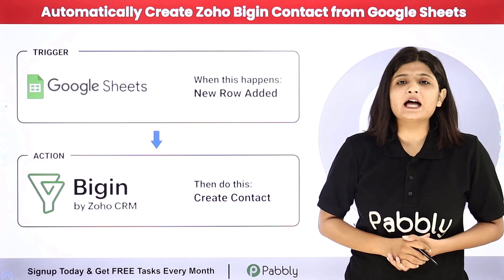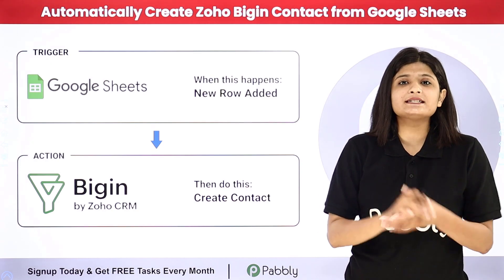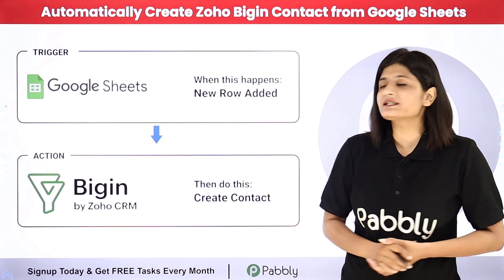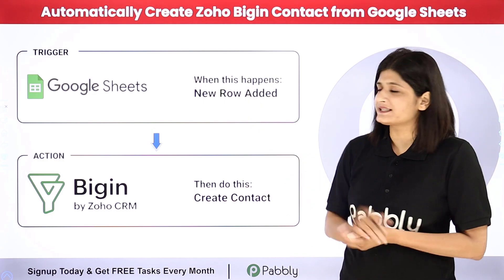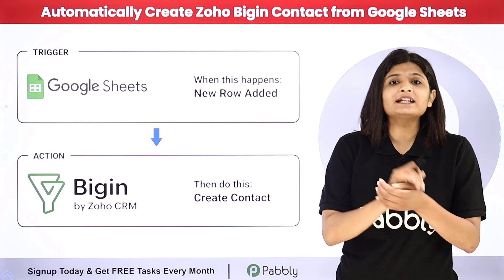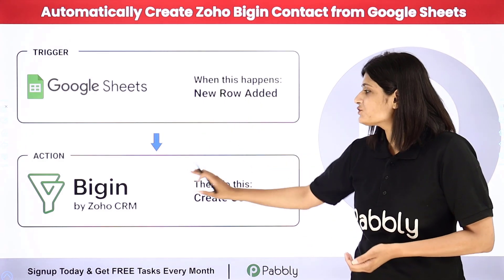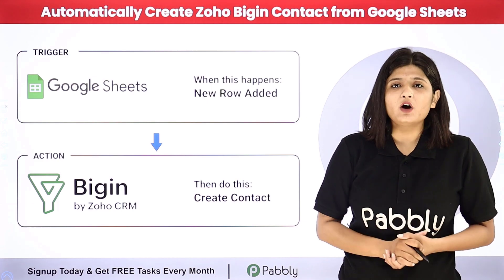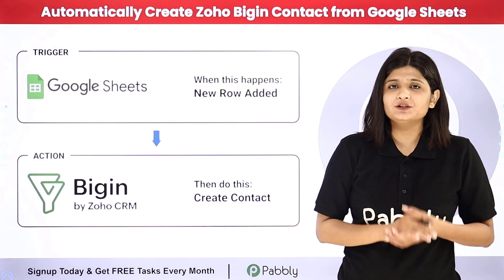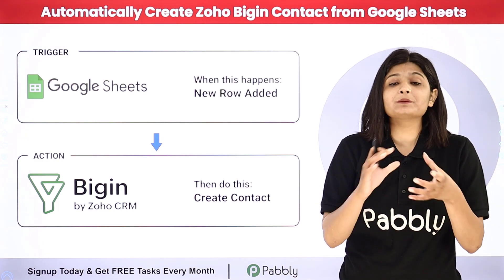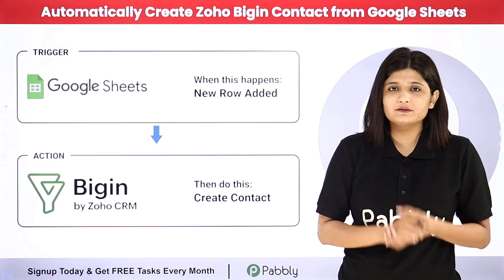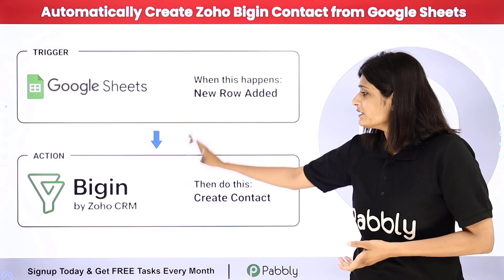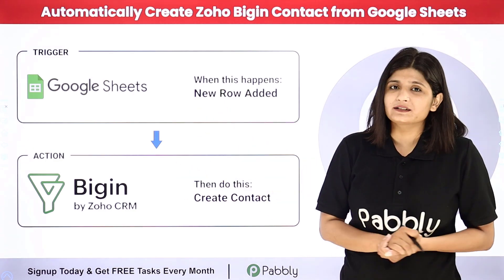Let's suppose I am running a real estate agency and collecting all my customer details in Google Sheets, and then manually creating contacts in Zoho Begin. Now I want that whenever I add a new row in Google Sheets representing a new customer, a contact should be automatically created in Zoho Begin.